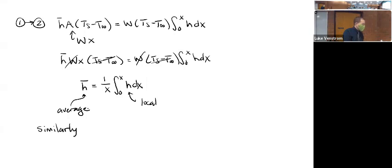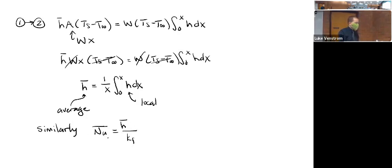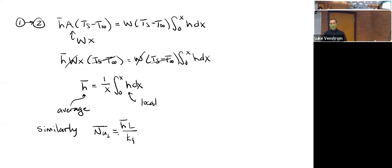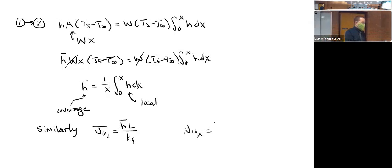Just as we have an average convection heat transfer coefficient, we can have an average Nusselt number. The average Nusselt number goes with the average convection heat transfer coefficient. For flat plates, you'll see either X or L used — L reminds us that it represents the full length of the plate from the leading edge, not a local position. That would be the average Nusselt correlation. We also have correlations for the local value, which would be H times x over k. The local Nusselt number goes with the local convection coefficient, and the average Nusselt number goes with the average convection coefficient.